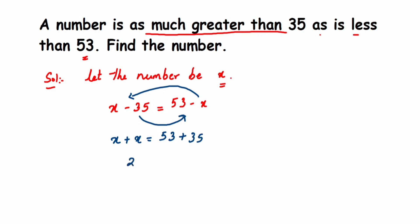Now since 2 is in multiplication, when transposed it comes in division. So from here we can write x is equal to 88 upon 2. Cancel the numbers, we'll get 44. So if x is equal to 44.